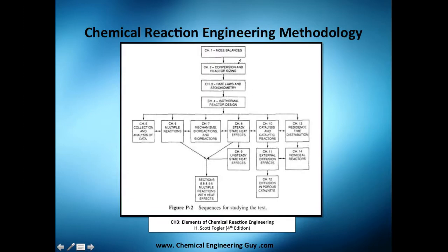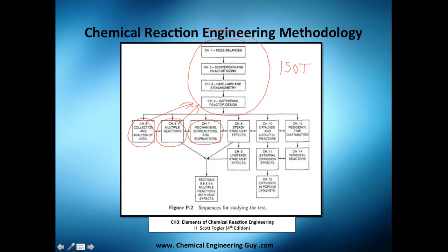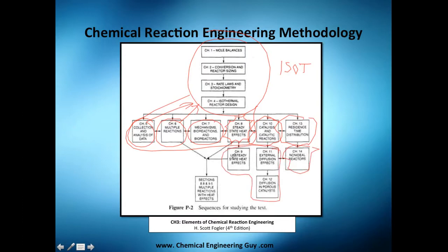We've already mastered isothermal reactor design, multiple reactions, and data collection. Now we're going to see a little bit on mechanisms and how to model non-elementary rate laws. After chapter 8, you're almost done with the general chemical engineering bachelor reactor engineering course. We still need to cover catalysis, residence time distribution, and non-ideal reactors — chapter 9 is not a common topic.